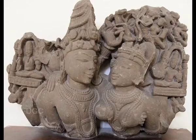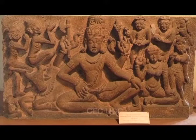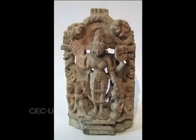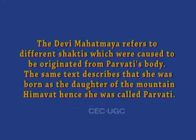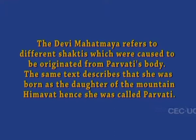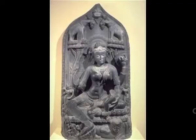A number of 12 Gaudis has been narrated in ancient Sanskrit texts like Aparajita Pracham. Rupamandana gives names of six Gaudis: Uma, Parvati, Sirya, Rambha, Chothela, and Tripura. The Agni Purana and Chaturvanga Chintamani explain the forms of Gaudi. The Devi Mahatmya refers to different shaktis which were caused to originate from Parvati's body, and the same text describes that she was born as the daughter of the mountain Himavanta. Hence she was called Parvati.